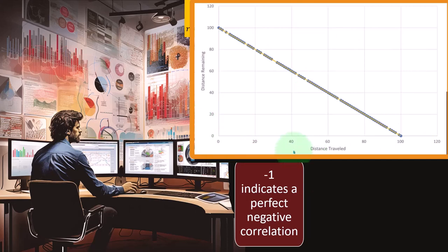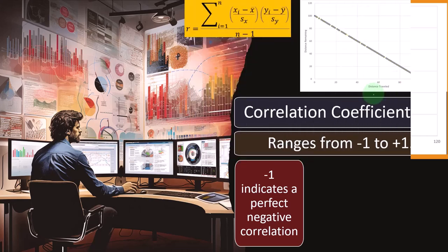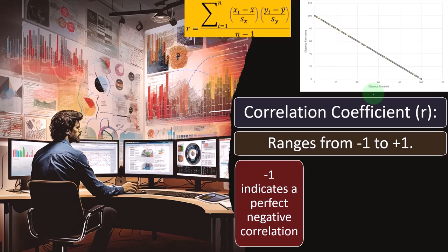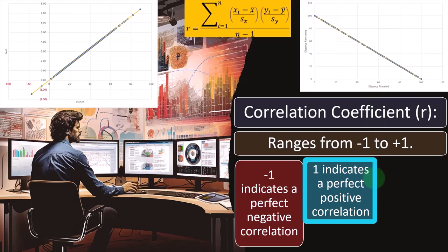In the distance-traveled example, you can see that negative correlation clearly. You would normally think of distance traveled as the independent variable, but you could flip them — either way you'd still get a downward sloping line. A value of positive one indicates a perfect positive correlation; for example, comparing feet and inches — any unit conversion will have a perfect positive correlation. One foot equals 12 inches, two feet equals 24 inches, and so on. In this case, it's hard to say one is causing the other — it's just measuring length using different scales.